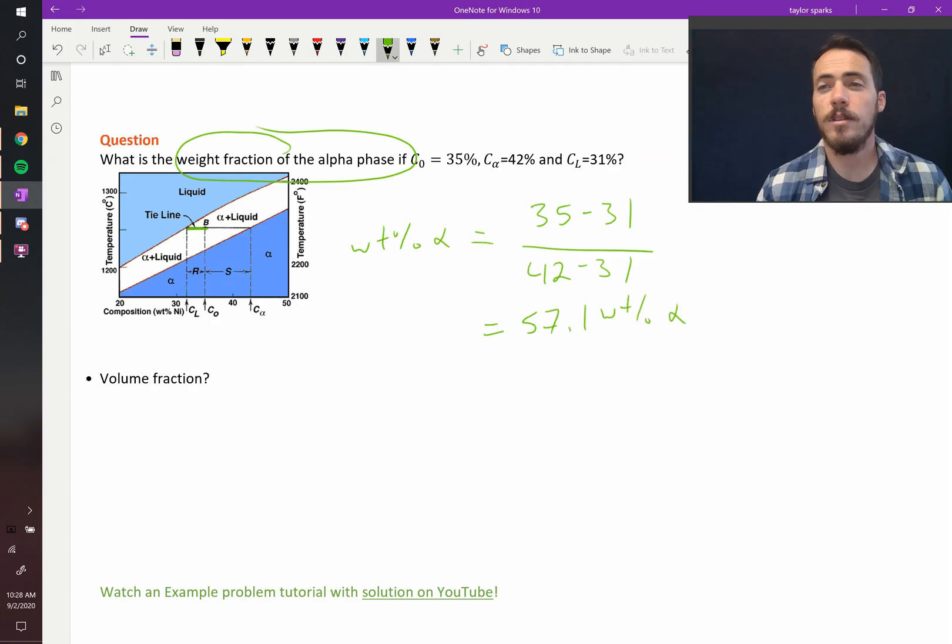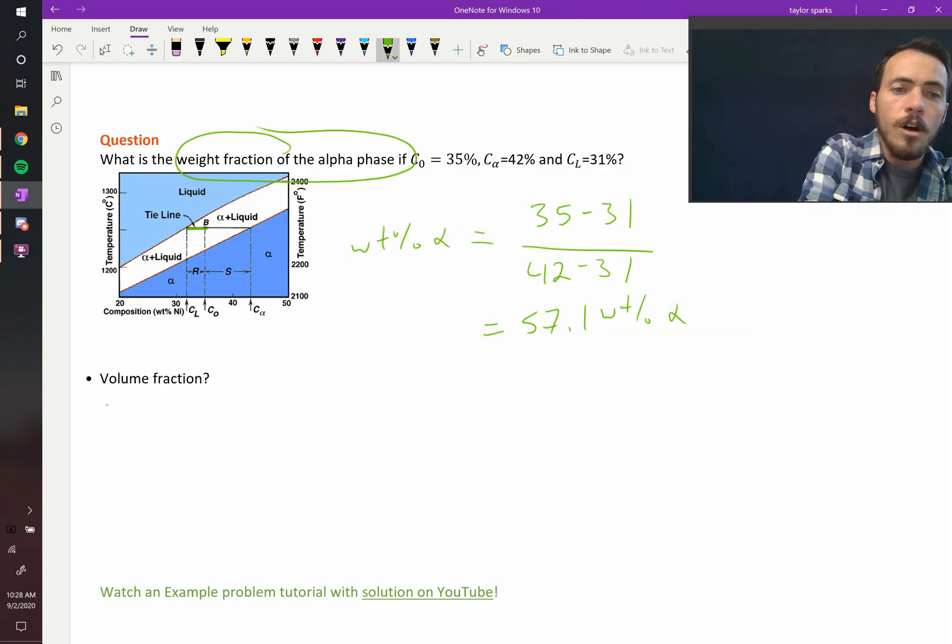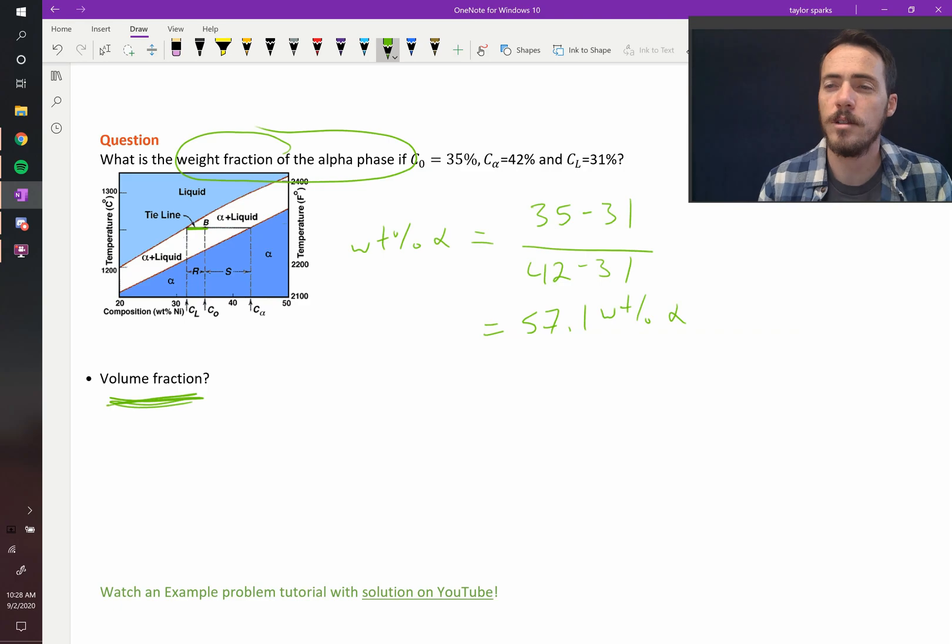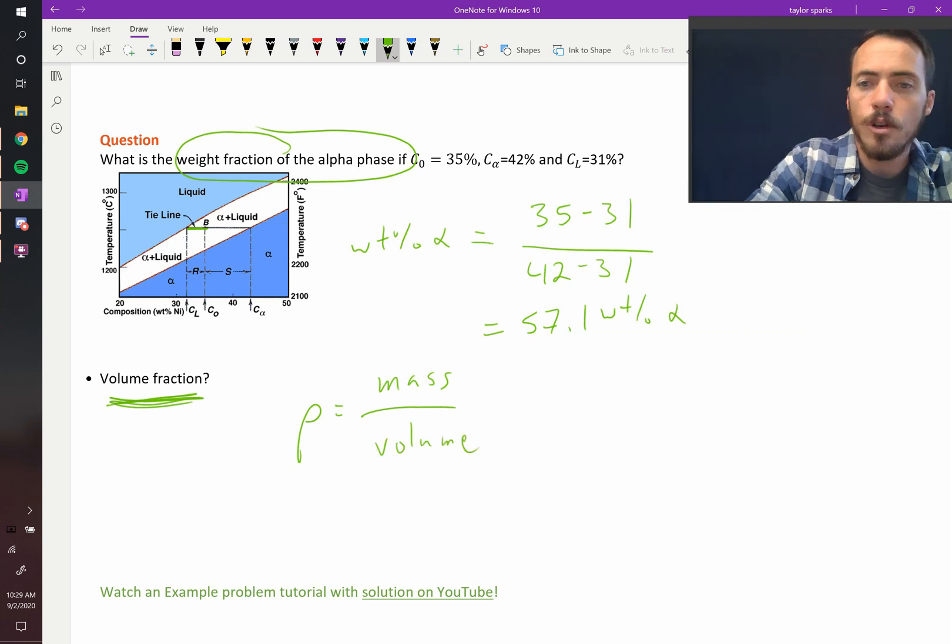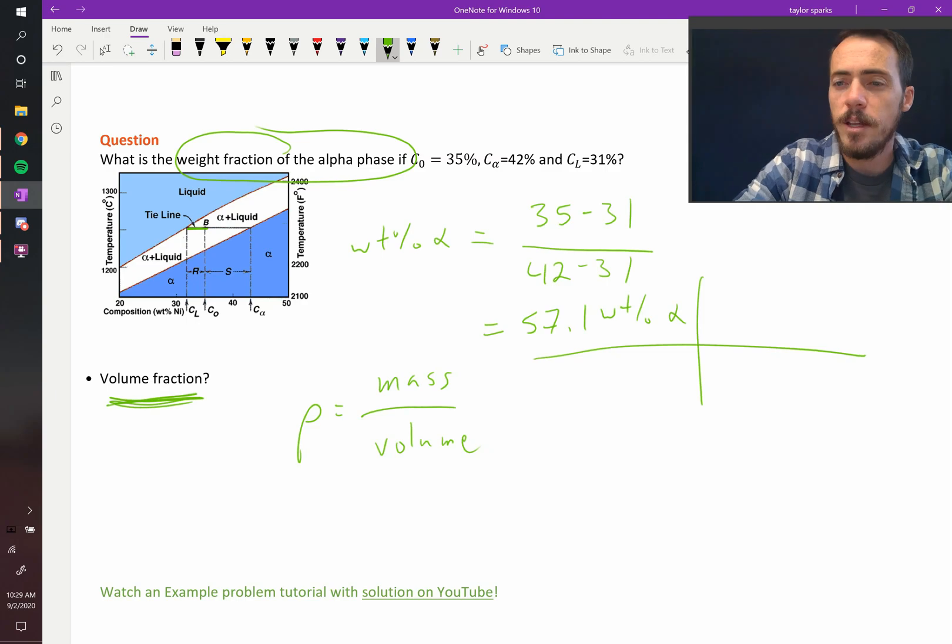Now let me ask you this. If instead of the weight fraction you wanted the volume fraction, how would you do that? How would you go from weight fraction to volume fraction? Well you need something that converts weight to volume. What's the tool for that? That's density. Density is equal to mass divided by volume.